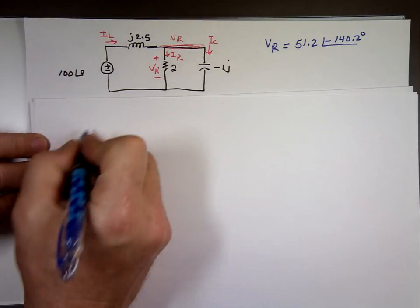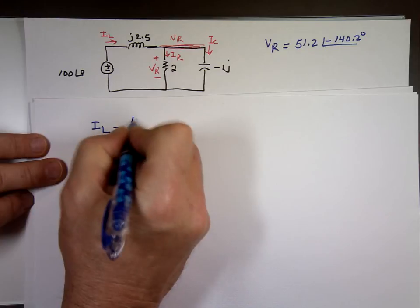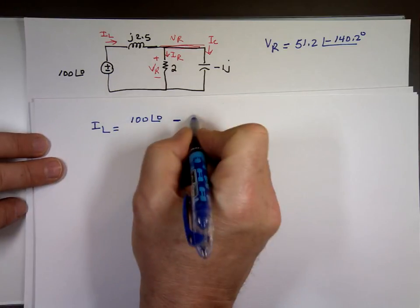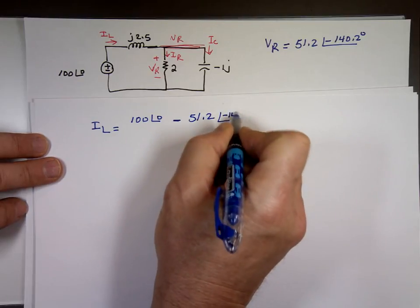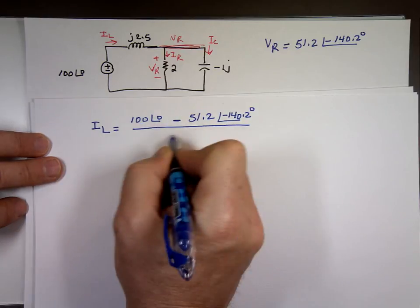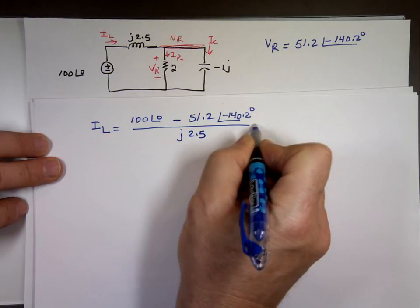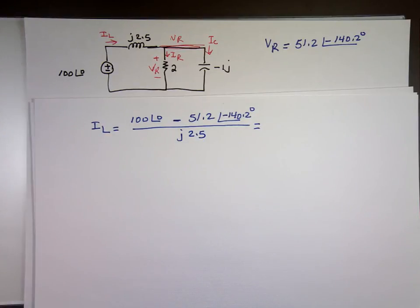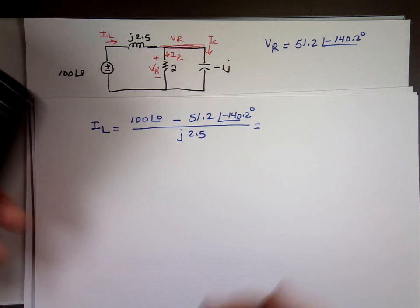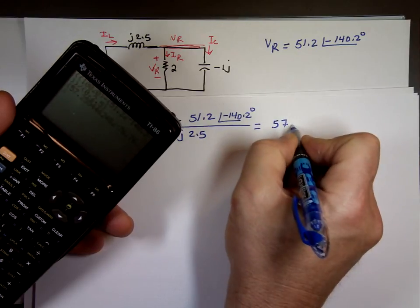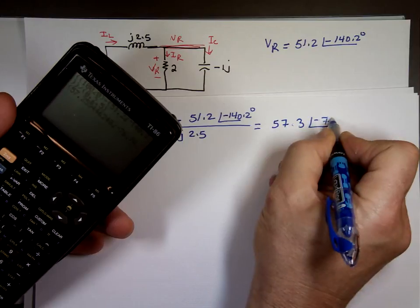Let's look at that. What's I sub L? It's 100 angle 0 minus VR, which is 51.2 angle negative 140.2, divided by J2.5. 100 angle 0 minus 51.2 angle negative 140.2 divided by 2.5. And I came up with 57.3 angle negative 76.8.